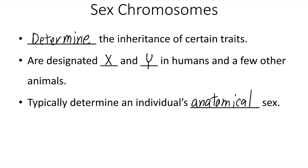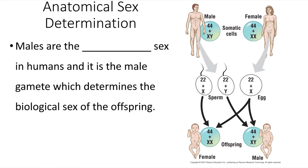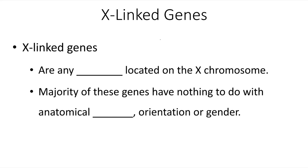As mentioned in the previous video, there is a recognition of exceptions and differences, and things aren't always as simple as presented in this introductory lecture. When it comes to anatomical sex determination, males are the heterogametic sex, meaning males produce two different types of gametes — sperm cells that carry either an X or a Y chromosome. Depending on which sperm cell fertilizes the egg, the offspring will either be anatomically male or female. There are several genes on the X chromosome, and many of them have nothing to do with anatomical sex — we call these X-linked genes. The majority of these have nothing to do with anatomical sex, orientation, or gender.